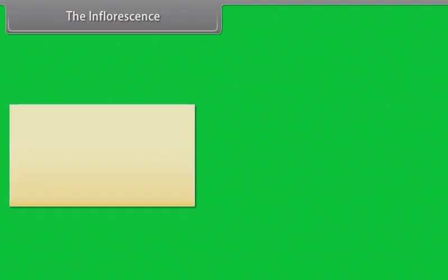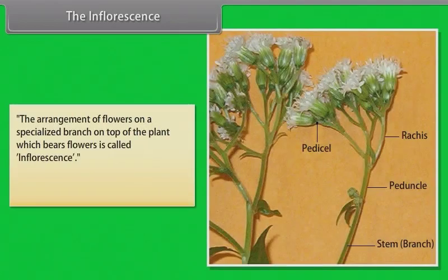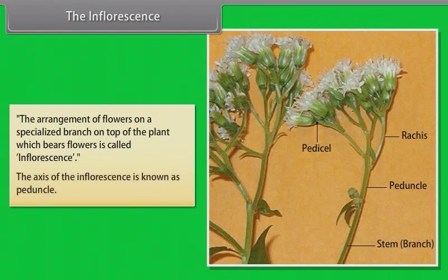The inflorescence is the arrangement of flowers on a specialized branch on top of the plant which bears flowers. The axis of the inflorescence is known as peduncle.